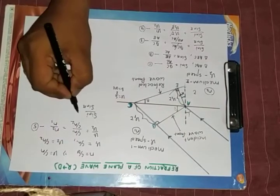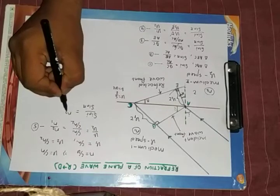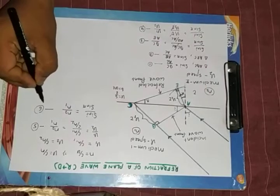v1 by v2, and we already have its value, that is equal to n2 by n1. This proves our Snell's law.